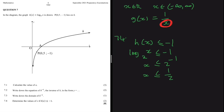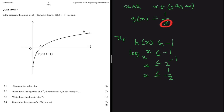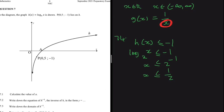But that's not all. Looking at the graph, log is not defined at 0 or below — the value of X always has to be slightly above 0 for log to be defined. So we also add the restriction that X must be greater than 0. Therefore the solution is 0 < X ≤ 1/2.